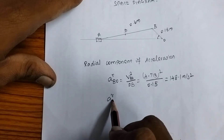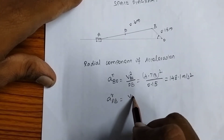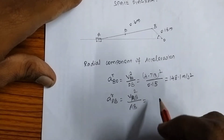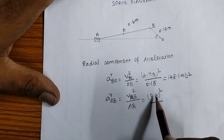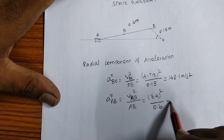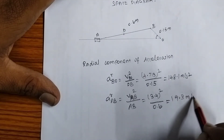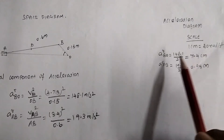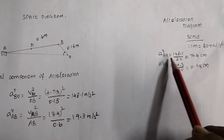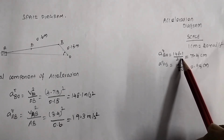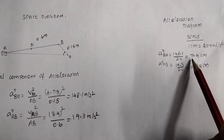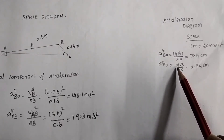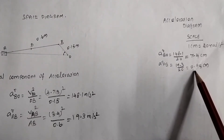Draw the acceleration diagram at scale 1 cm = 20 m/s². The radial component of acceleration of link BO = 148.1 m/s² → 148.1 / 20 = 7.4 cm. The radial component of acceleration of link AB = 19.3 m/s² → 19.3 / 20 = 0.95 cm.